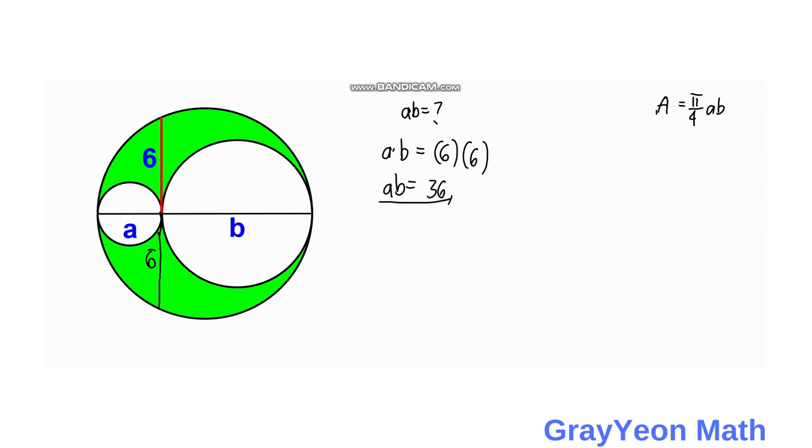So now the area would be area is equal to pi over 4 times 36 and that gives us 9π. So area is equal to 9π square units.